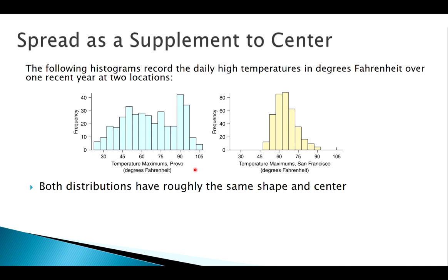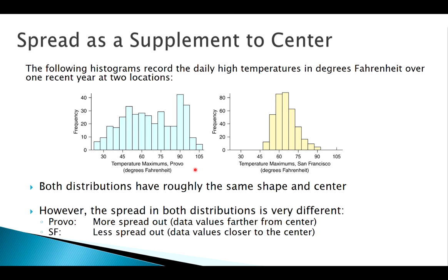So they have similar centers, but the spread is much larger. We have much more variation or variability in Provo. That's why people like living in San Francisco - there's not much variability, you really wear the same clothes all year almost. But in Utah, lots of variability.